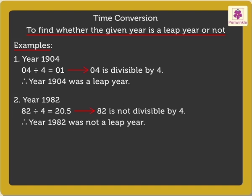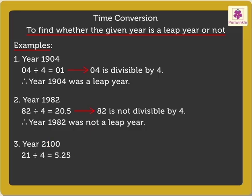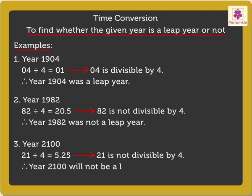Finally, we shall find out whether the year 2100 will be a leap year or not. As the year 2100 is a century year, we have to check if the number represented by the first two digits, 21, is divisible by 4. 21 is not divisible by 4. Therefore, the year 2100 will not be a leap year.